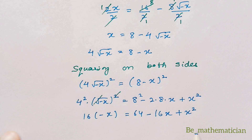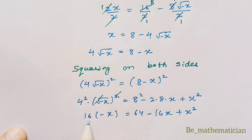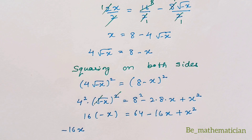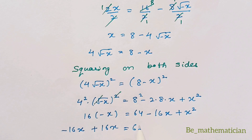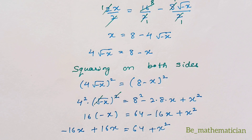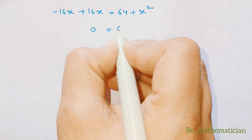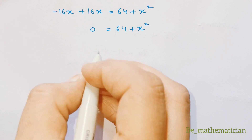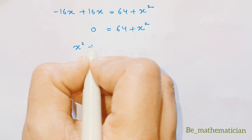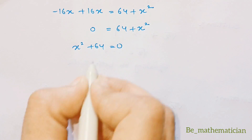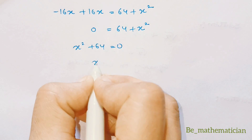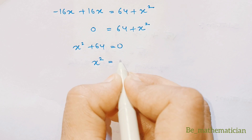Moving -16x to the left hand side: -16x + 16x = 64 + x², so 0 = 64 + x². Rewriting this equation as x² + 64 = 0, and moving 64 to the right hand side gives x² = -64.